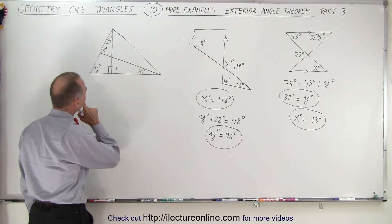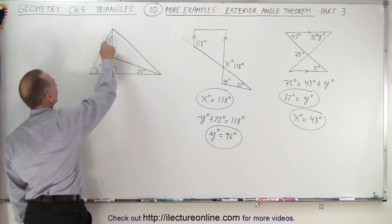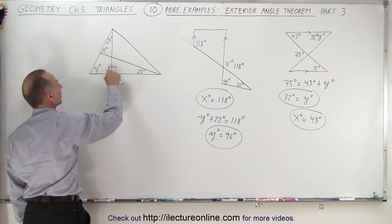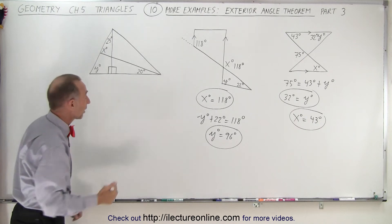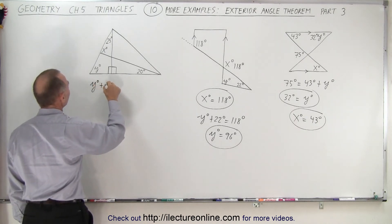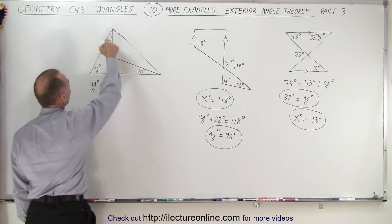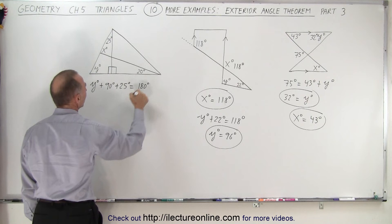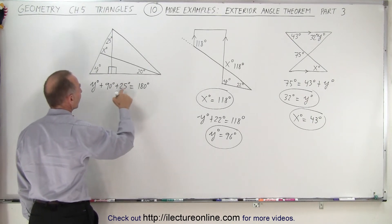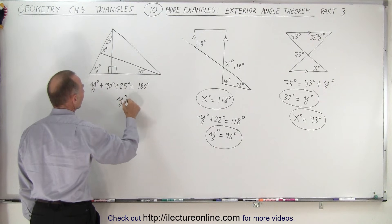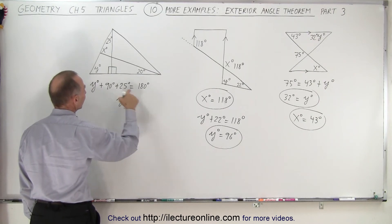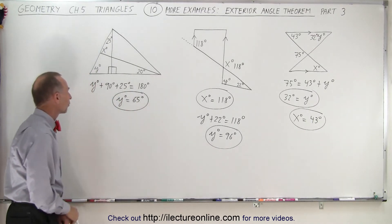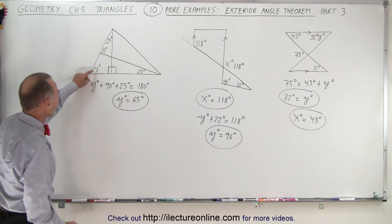Let's first find y degrees, because I can see this triangle where I know two angles, so I can find y. The sum of angles must add up to 180 degrees: y degrees plus 90 degrees from the right angle plus 25 degrees equals 180 degrees. Subtracting 90 and then 25, y degrees equals 180 minus 90 minus 25, which is 65 degrees.